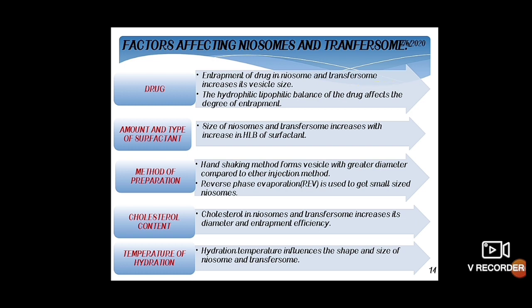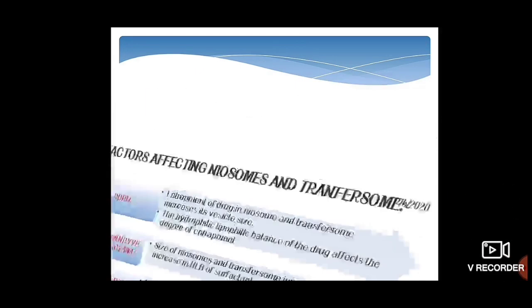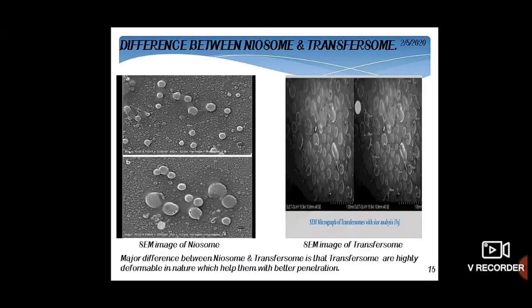Factors affecting Niosomes and Transferosomes include: the drug itself — entrapment increases vesicle size; type and amount of surfactant — vesicle size increases with increasing HLB value of surfactant; method of preparation — the hand shaking method gives vesicles with greater diameter compared to the ether injection method; cholesterol content — increasing cholesterol increases diameter and entrapment efficiency; and temperature on hydration — higher hydration temperature increases the shape and size of Niosomes and Transferosomes.